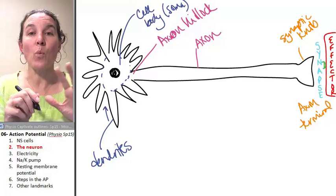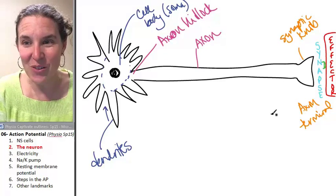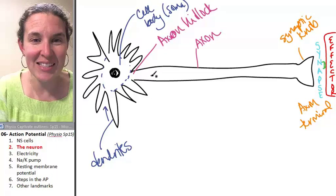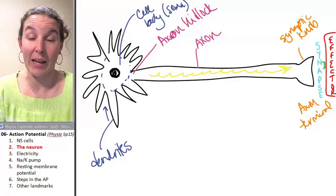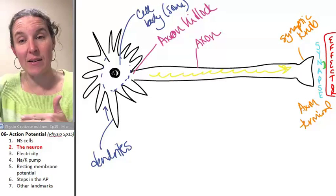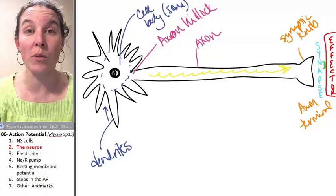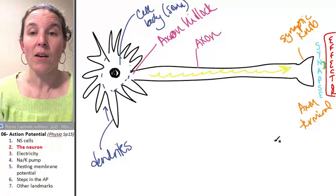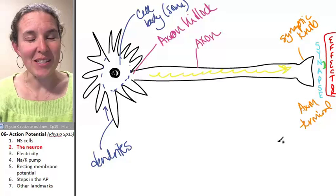So we're going to spend the majority of the day talking about the electricity or the message that gets sent down. You can't see that at all. I can't see it at all. But the electrical message that gets sent to the synaptic knob. And then tomorrow we'll talk about the chemical message that gets released into the synapse and passes the message on.